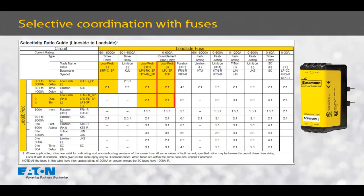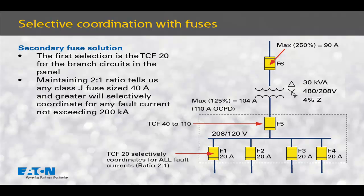Per this selective coordination table, all I need to do is maintain a 2-to-1 ratio between the upstream line-side and downstream load-side fuse. The first fuse we select is the branch fuse downstream of the transformer — those are fuses F1 through F4. These devices are typically selected based upon the loads they supply; they will be our given starting point. We select the largest device in the panel and ensure selectivity with the upstream devices. The largest in this example is 20 amps, so that's where we'll begin.